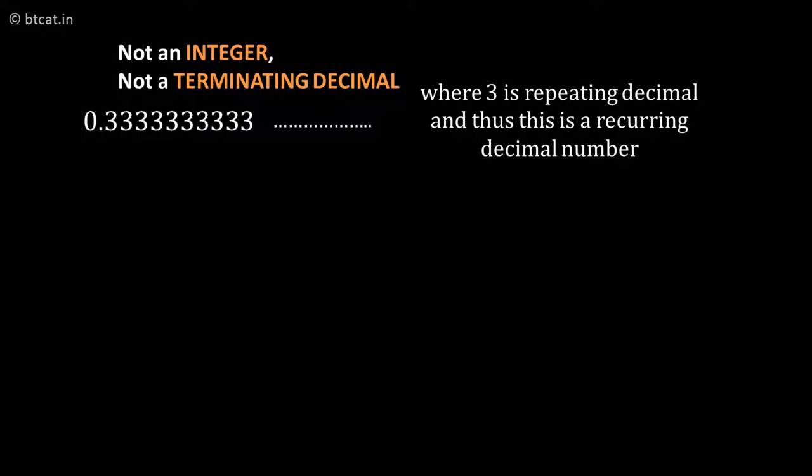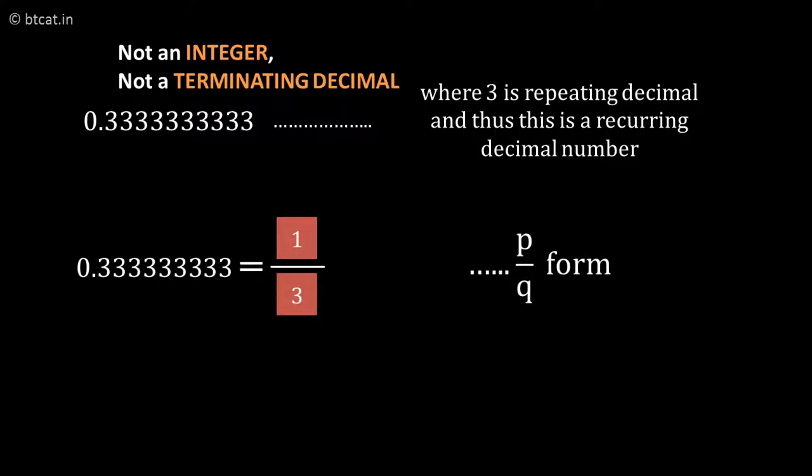Now let us take a number 0.333333... It is a recurring kind of number - it is not an integer, it is not a terminating decimal, but as you can clearly see, it is repeating: 0.33333, the same number coming again and again. So it is a case of non-terminating but repeating decimal, and it is also a rational number because we can write it as 1/3.